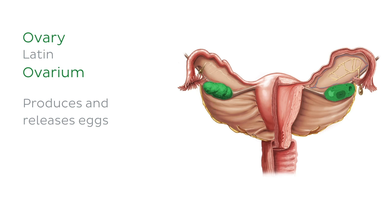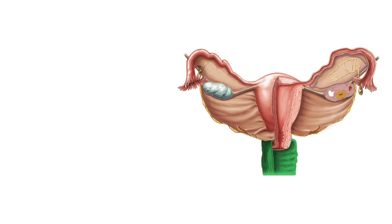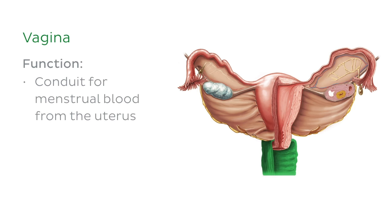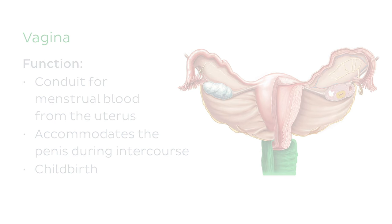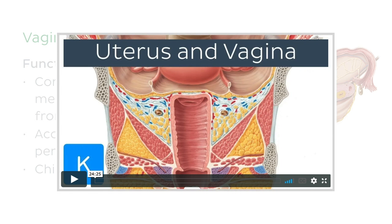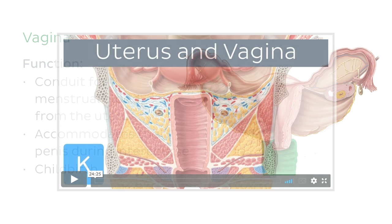The uterus is connected to the vagina inferiorly. The vagina serves as a conduit for menstrual blood from the uterus, accommodates the penis during intercourse, and during childbirth, the baby passes through the vagina to reach the external environment. This was a very brief overview of associated structures, but if you're keen for more, visit our website for more in-depth tutorials on these topics.